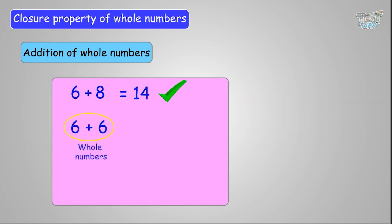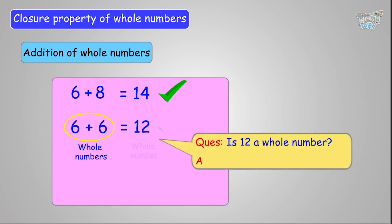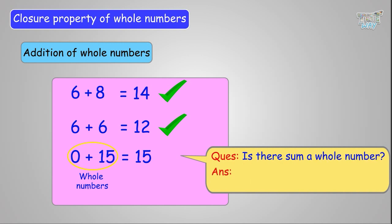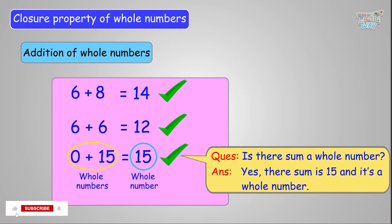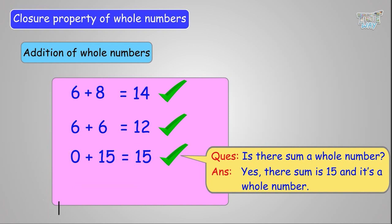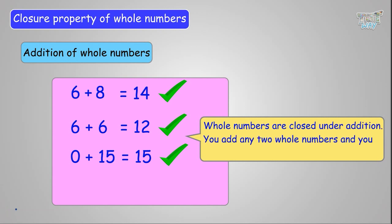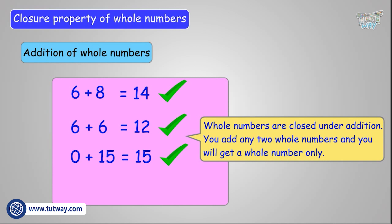Take two other whole numbers: 6 and 6. The sum is 12 — 12 is a whole number. Take 0 and 15; the sum is 15, which is also a whole number. So we can say that the sum of any two whole numbers is always a whole number. This is known as the closure property — whole numbers are closed under addition. You can add any two whole numbers and you will always get a whole number.